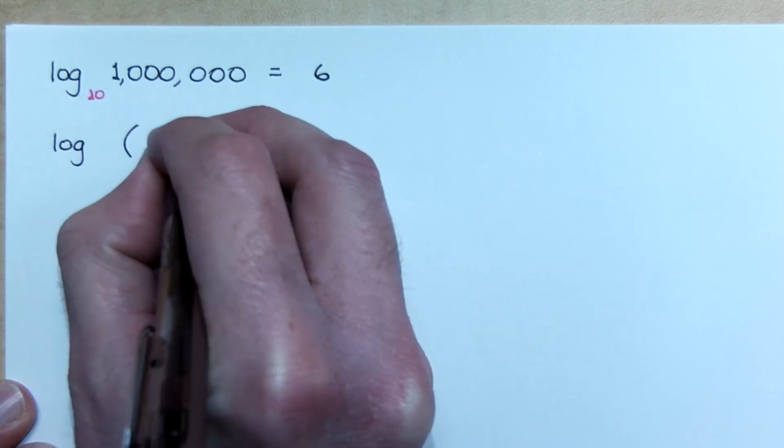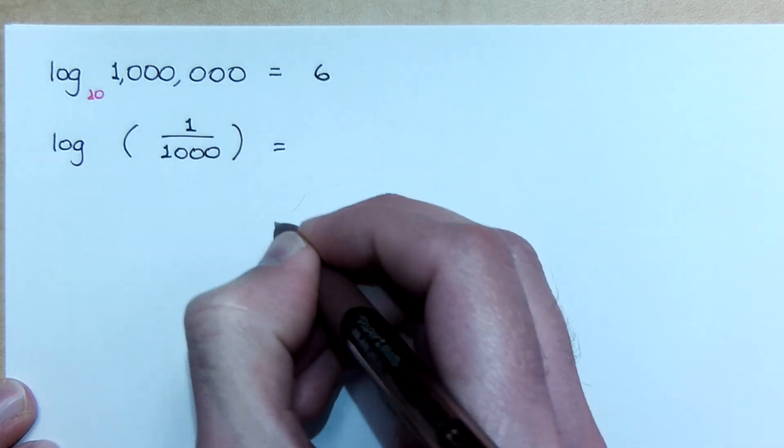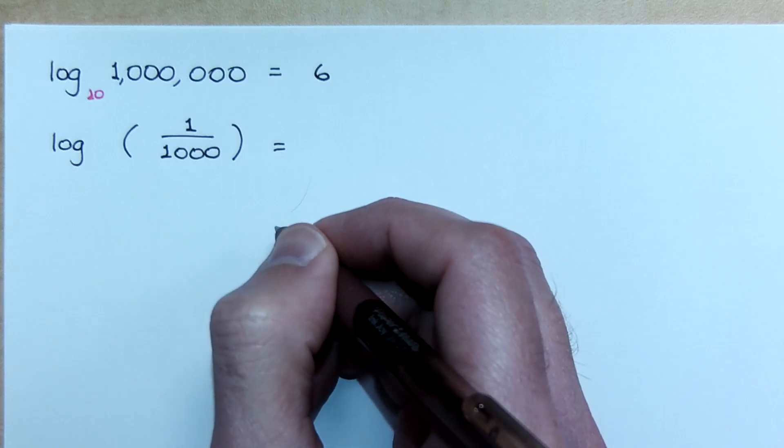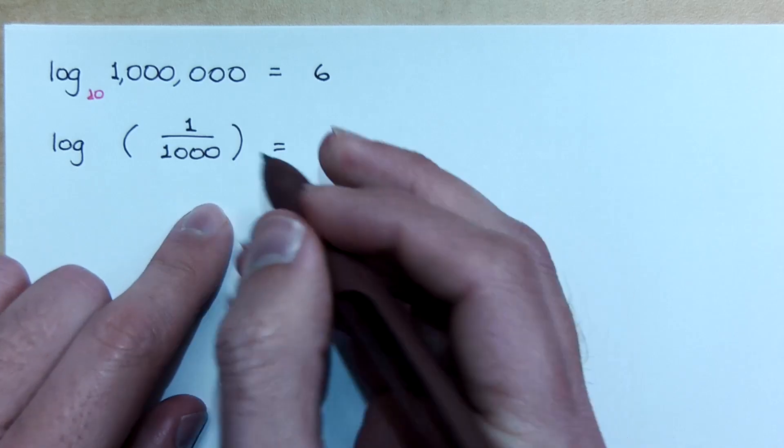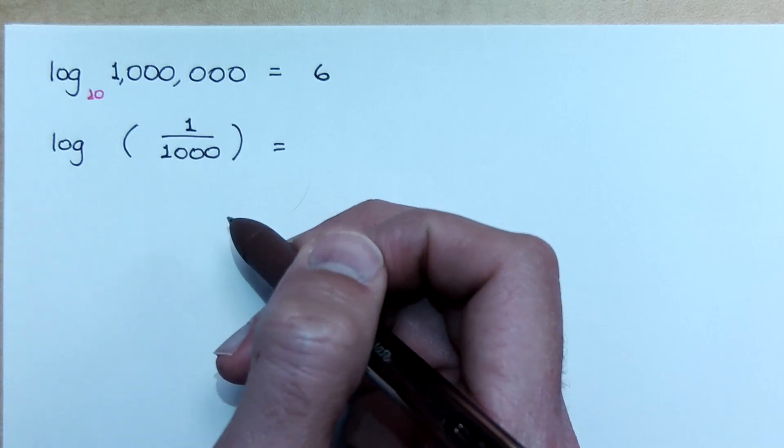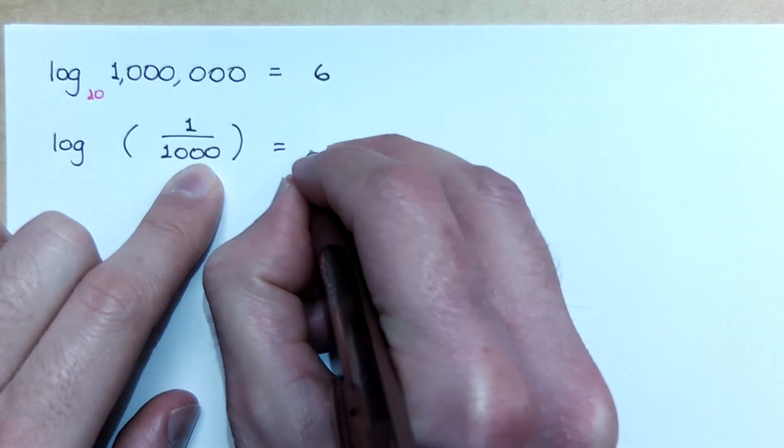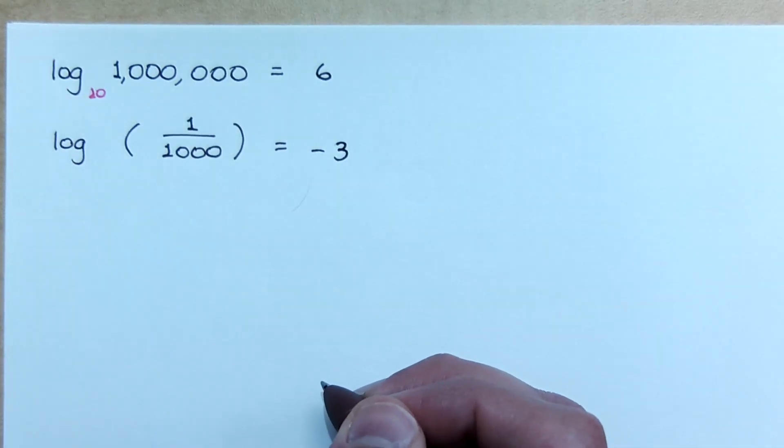How about log of one over one thousand? Negative four. Negative three. That was three, sorry. I'm looking at the... One, two, we've got three zeros. It's easy to throw in the one there because you think four digits, but you count the zeros, there's three. There are three and it says negative.